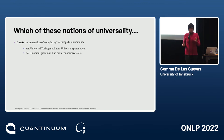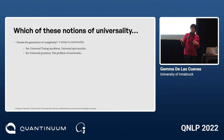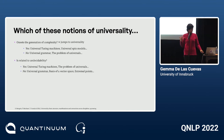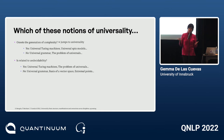For Turing machines and spin models, yes; for the universal grammar and the problem of universals, no. And which types are related to undecidability? Yes for the universal Turing machines and, surprisingly, the problem of universals; no for the universal grammar, the basis of a vector space, the extremal points, and so on. We're coming up with a table of properties that each type of universality has or does not have.